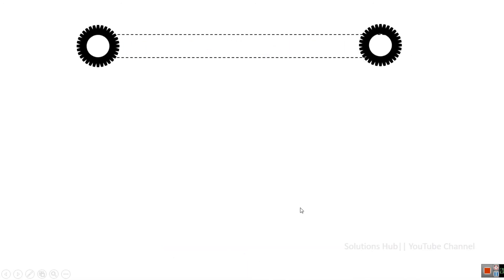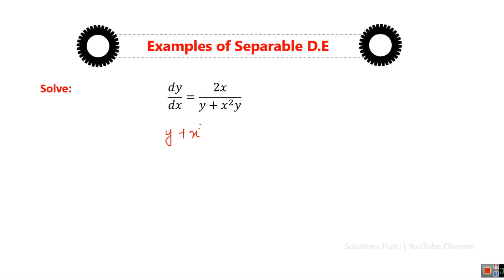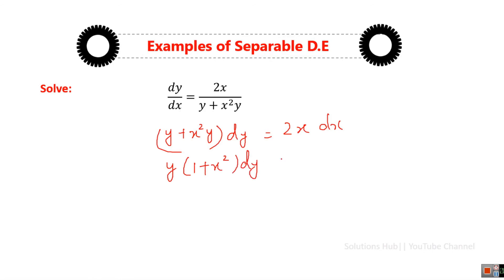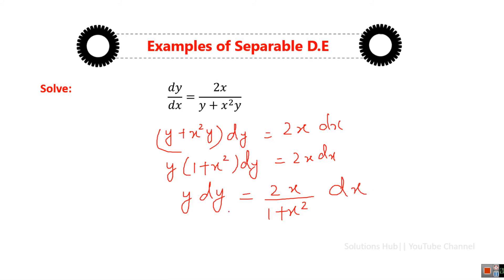Moving ahead to a new example, we have a new differential equation. First, cross multiplying gives (Y + X²Y) dY = 2X dX. Taking Y as a common factor on the left gives Y(1 + X²) dY = 2X dX. Moving (1 + X²) to the right-hand side, we get Y dY = 2X/(1 + X²) dX. We have now succeeded in separating the functions of Y and X.